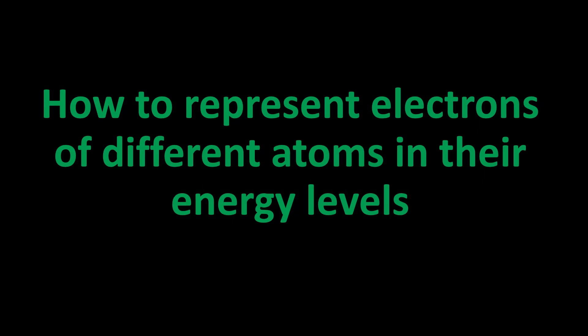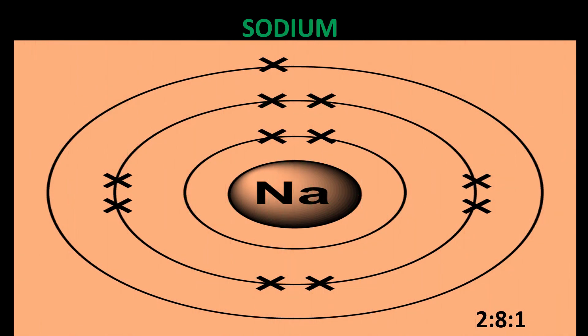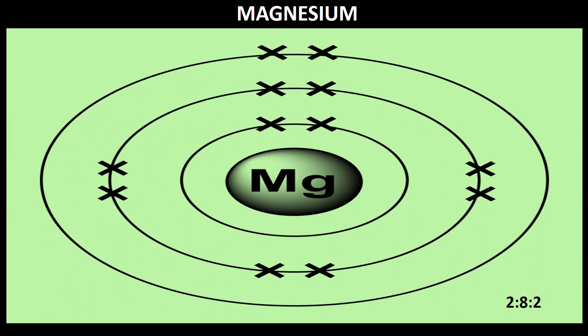How to represent electrons of different atoms in their energy levels: Sodium has 11 electrons, so two take the first energy level, eight take the second, and one takes the third energy level. Magnesium has 12 electrons, so two take the first energy level, eight take the second, and two take the third energy level.